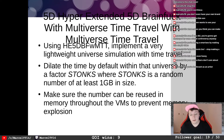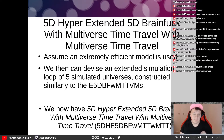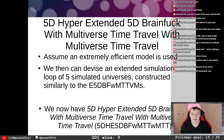Make sure the number can be reused in memory throughout the VMs to prevent memory explosion. Assume an extremely efficient model is used due to memory constraints, and devise an extended simulation loop of about five simulated universes — depending on how the model was implemented. Constructed similarly to the e5D BFWMTT VMs, we now have 5D Hyper-Extended 5D Brain Fuck with Multiverse Time Travel with Multiverse Time Travel — 5D he5D BFWMTT WMTT.